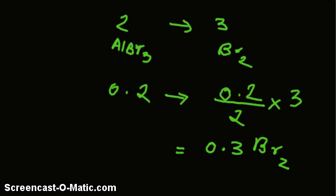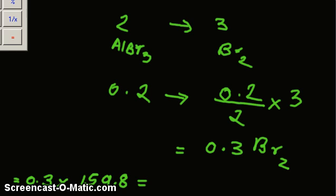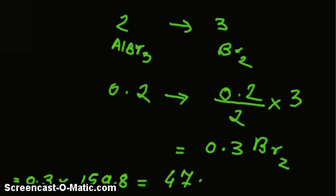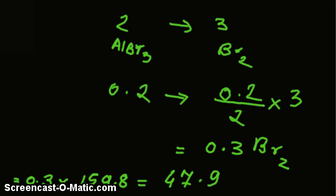This value is in moles. We will convert it into grams by multiplying the moles by the molar mass. So, 0.3 moles multiplied by 159.8 g/mol, which is the molar mass of bromine, gives us 47.9 grams of bromine.